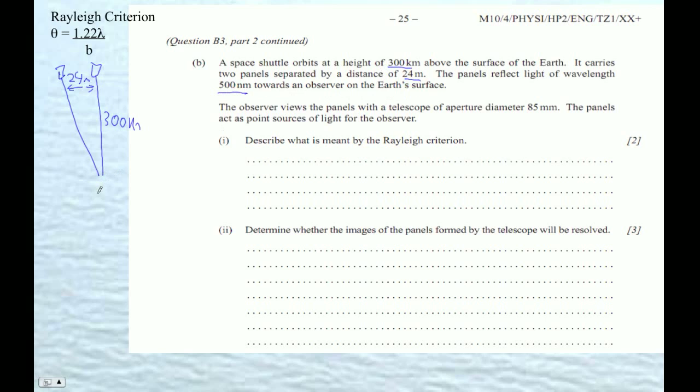And it reflects light of exactly 500 nanometers toward an observer on the Earth's surface. So there we are observing it. And the observer views them through an aperture of 85 millimeters. So that's our B. What is meant by the Rayleigh criterion? We got two marks, what are we going to do for two marks? The Rayleigh criterion is the minimum angle to be discerned. We can discern the two panels. And it's determined, I guess I'd give the formula for it. So here's our little formula.